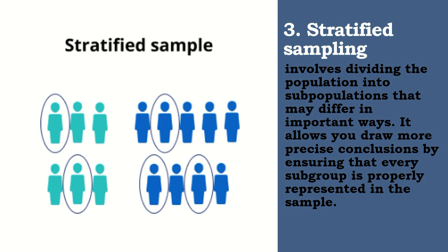Para magamit mo itong klase ng sampling method na ito, you will divide the population into subgroups called strata based on the relevant characteristics such as gender, age range, income bracket, or job role. Based on the overall proportions of the population, you'll calculate how many people should be sampled from each group. Then, you will use random or systematic sampling to select a sample from each subgroup.